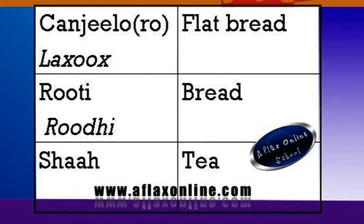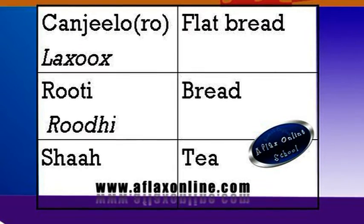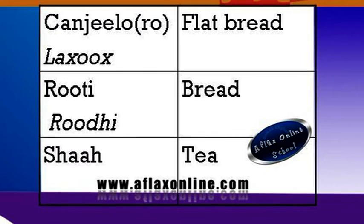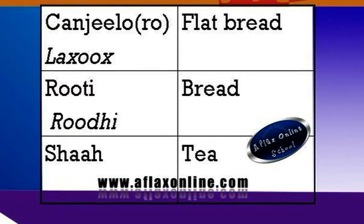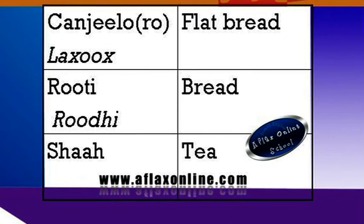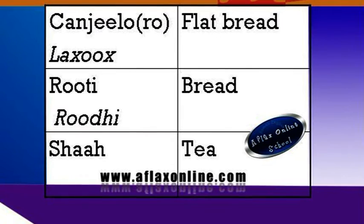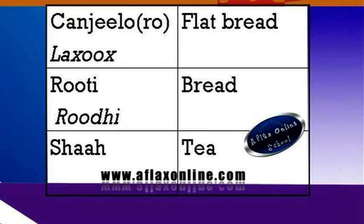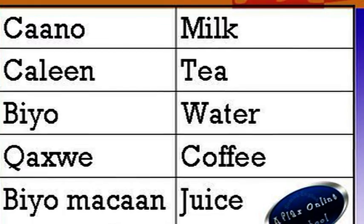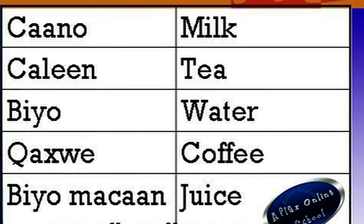'Shaah' — that's tea. Somali people are very popular for drinking tea — morning, midday, night, every time. Because we add a lot of sugar, it's something that people don't always understand. When we move to places that don't have a lot of sun, it's not good to drink tea with a lot of sugar because you don't sweat, and that can have a health impact. 'Caano' — that means milk.